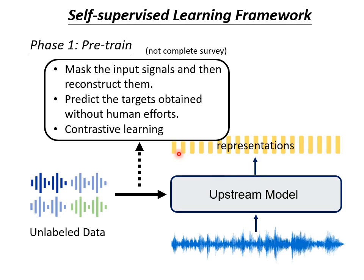Training this upstream model does not require any labeled data. The purpose of that upstream model is to take a voice data as input and output representations that vectorize the voice data. About how to train an upstream model — due to the time limit, we will just roughly go through the main idea. There are a variety of methods that, without labeled data, can train an upstream model.